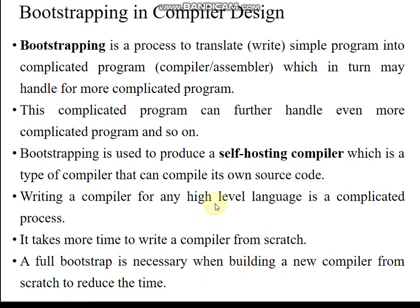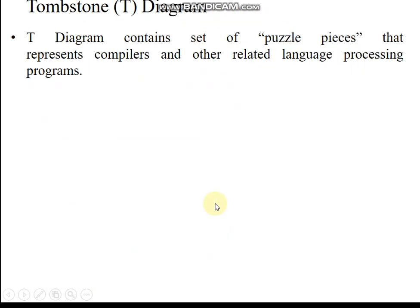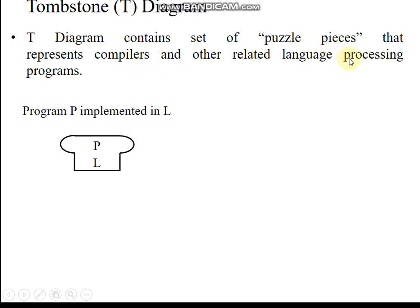To represent bootstrapping, we use Tombstone diagram symbols, also called T-diagrams. A T-diagram has a set of puzzle pieces that represent compilers, interpreters, and other related language processing systems. One symbol is the Kuru-based T symbol, which represents a program written in language L — for example, a program written in C.